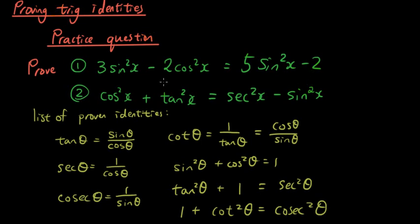The first thing we're going to do is think about where the cos squared x disappeared to. On the right hand side I don't have cos squared x, I have sin squared x. That means I have to try and get rid of this cos squared x somehow and turn it into sin squared x.